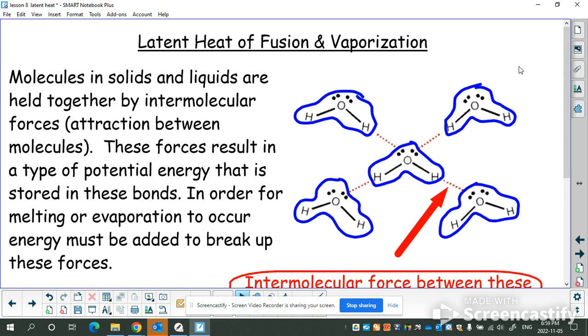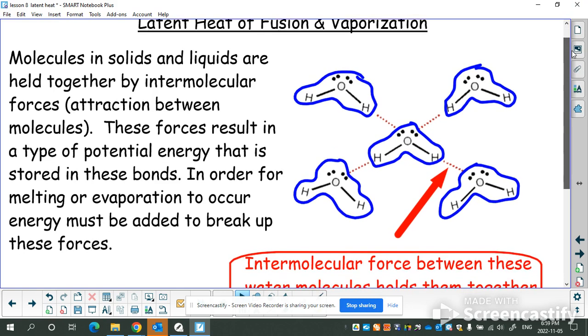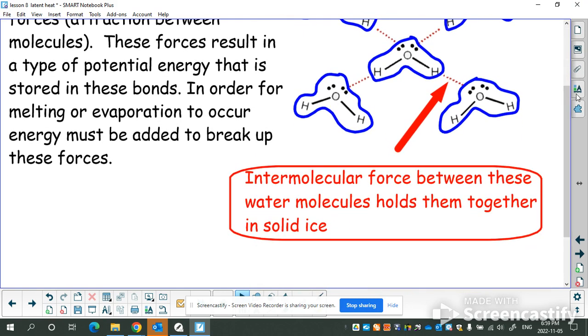For example, molecules in solids and liquids are held together by what we call intermolecular forces. Intermolecular forces are just the attraction between these molecules. Remember in a solid, the molecules are going slowly, they're really close together, and because of that, attractions can form. These attractions create what we call a bond, an intermolecular bond or between molecule bond. We're not going to get into the chemistry of this. We just need to know they exist.